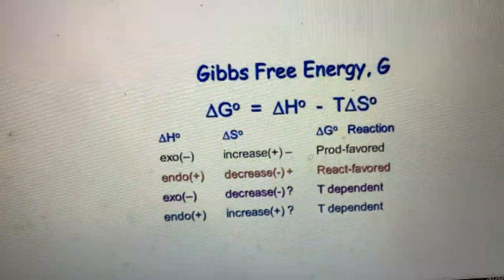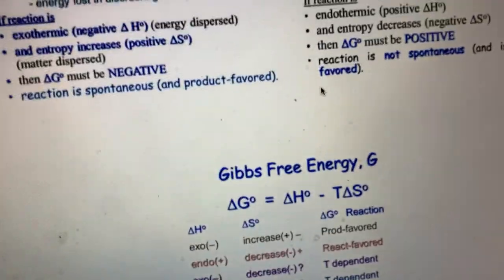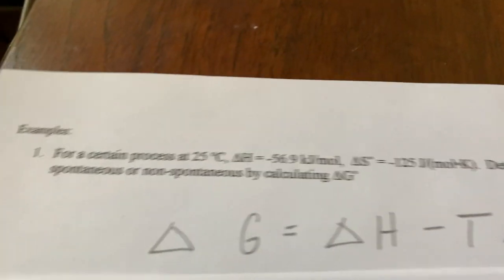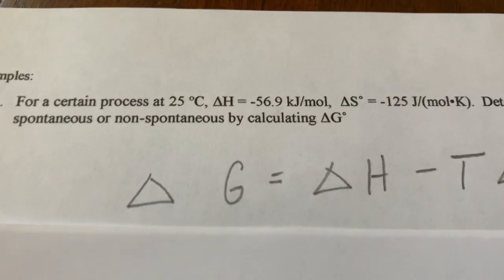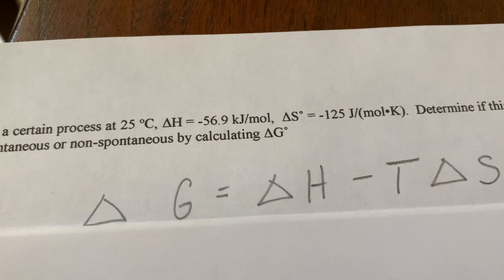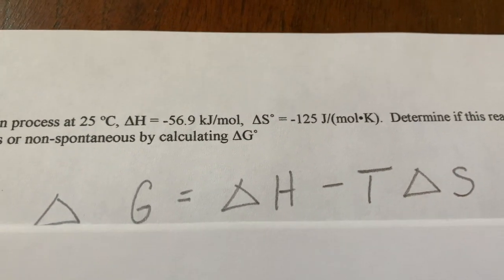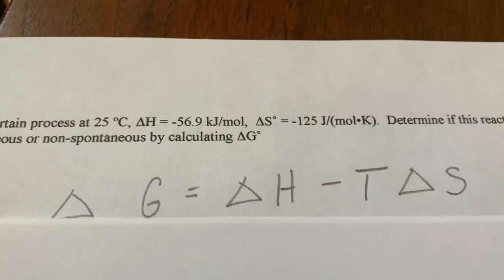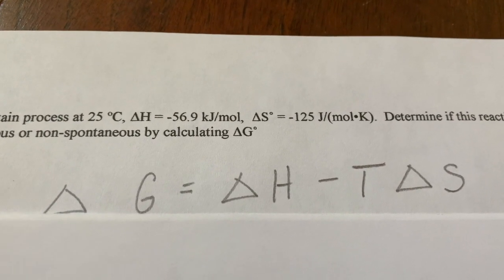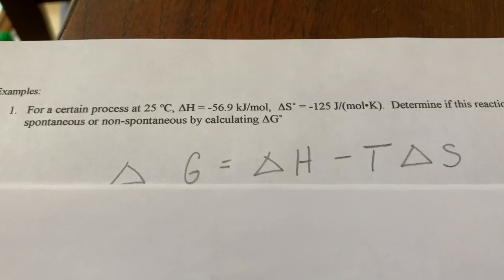Let's take a look at your problem. You're welcome to go ahead and give it a try and then come back to the video or you can just watch as I show you mine. For a certain process at 25 degrees Celsius, your delta H is negative 56.9 kilojoules per mole, delta S is negative 125. Determine if the reaction is spontaneous or non-spontaneous by calculating delta G.